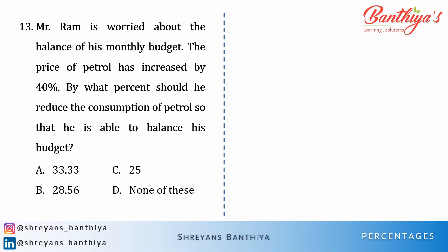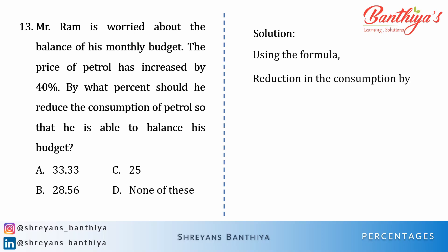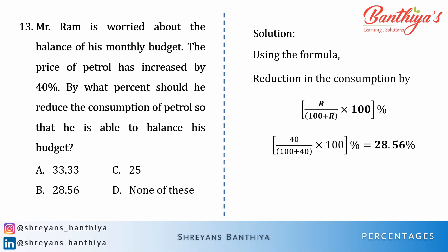So let's see the solution — we already know it. Using the formula, reduction in consumption = R / (100 + R) × 100. This gives 40 / (100 + 40) × 100, which equals 28.56%. I hope you have also reached the right answer.